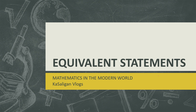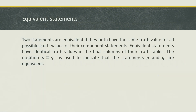Hi, good day everyone. Welcome back to my YouTube channel, Casaligan Vlogs. Today in Mathematics in the Modern World, our topic is all about equivalent statements. Equivalent statements are truth statements that are equivalent if they both have the same truth value for all possible truth values of their component statements. They have identical truth values in the final columns of their truth tables. The notation p ≡ q is used to indicate that statements p and q are equivalent.